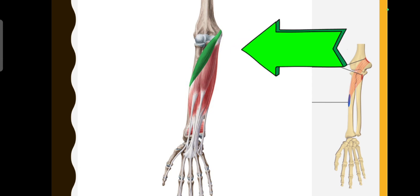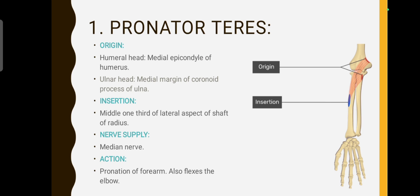Pronator teres is one of the anterior compartment of the forearm muscles. Forearm muscles are divided into two compartments: the anterior compartment, called the flexor compartment, and the posterior compartment, called the extensor compartment. The anterior compartment is divided into superficial group and deep group. Pronator teres is one of the main muscles of the superficial group of forearm muscles.